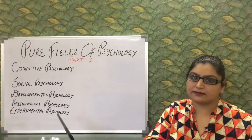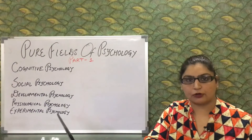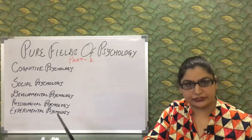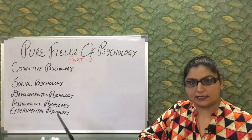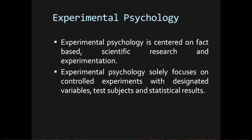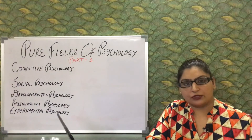Next is experimental psychology. Experimental psychology is centered on fact-based scientific research and experimentation. It solely focuses on controlled experiments with designated variables, test subjects, and statistical results.